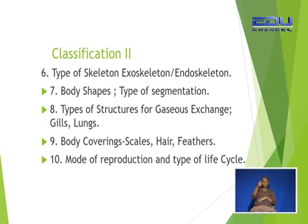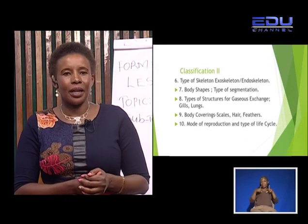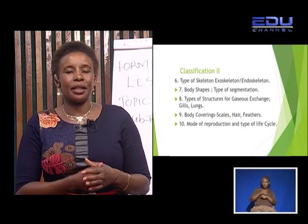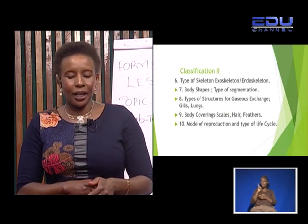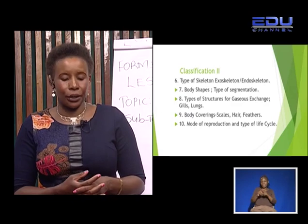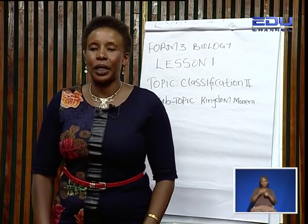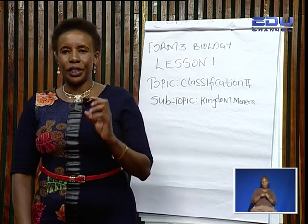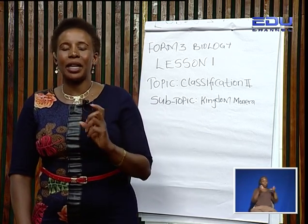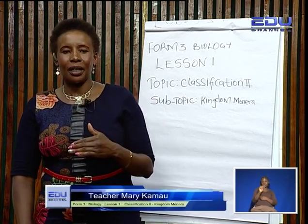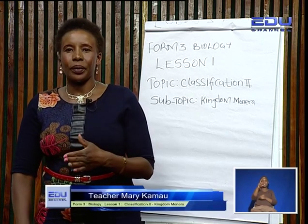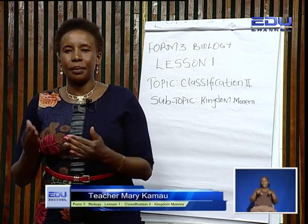Mode of reproduction can also be used to classify living organisms. Some living organisms have complete metamorphosis, that is a full life cycle, while others have incomplete metamorphosis, which they undergo to complete their life cycle. Those are some of the features used to classify animals in different taxons. Remember, a taxon is just a group of living organisms which have similar structures.